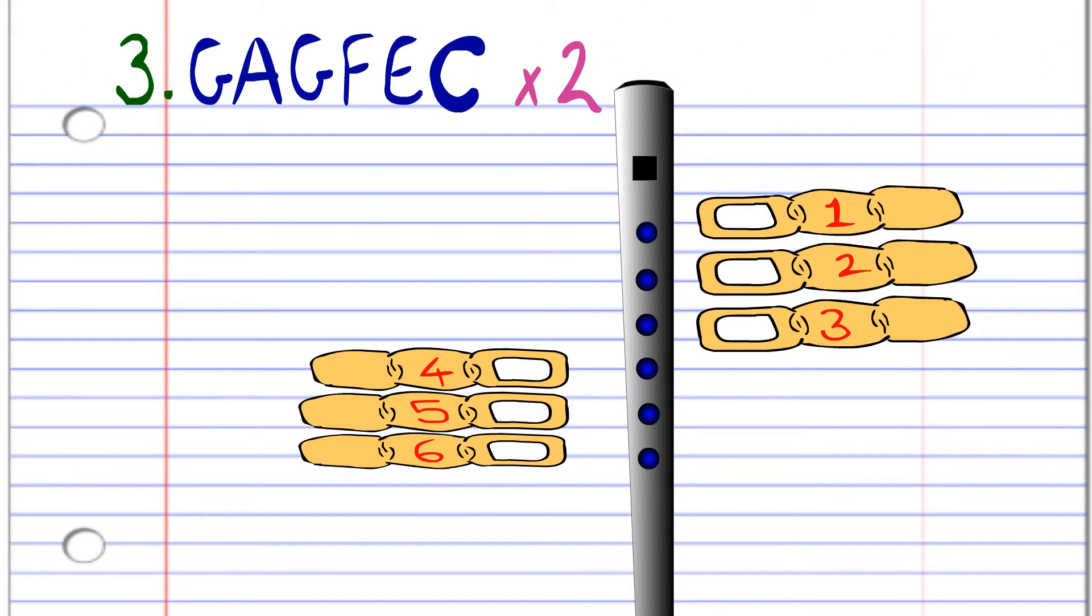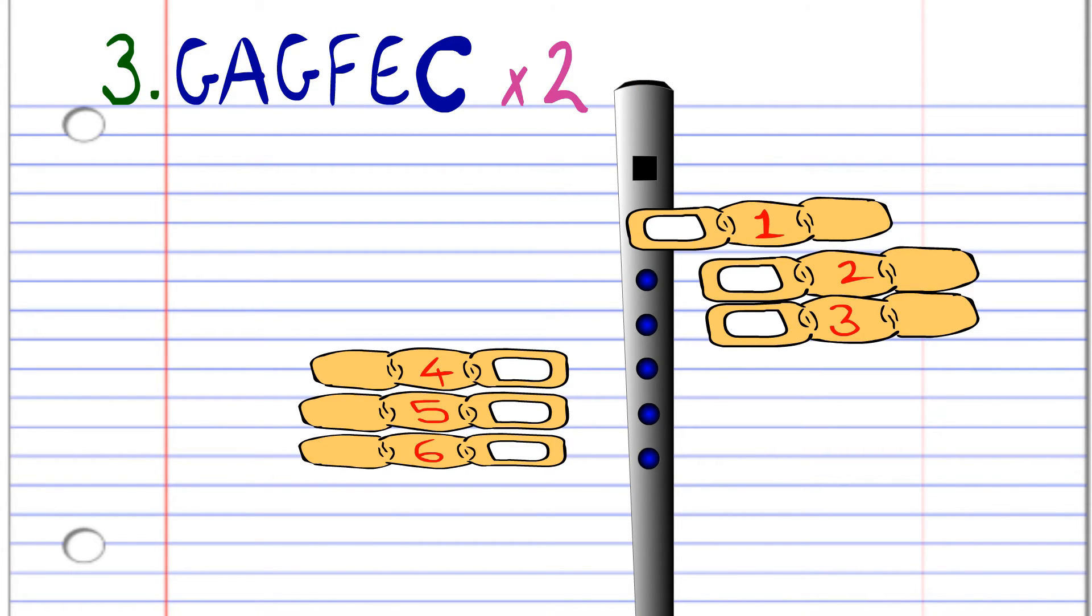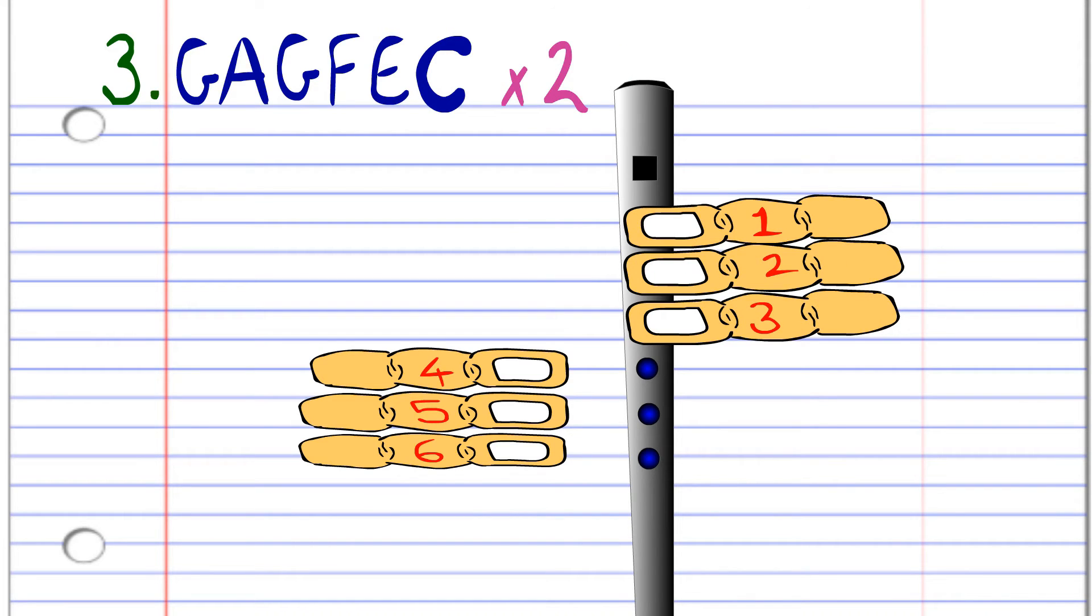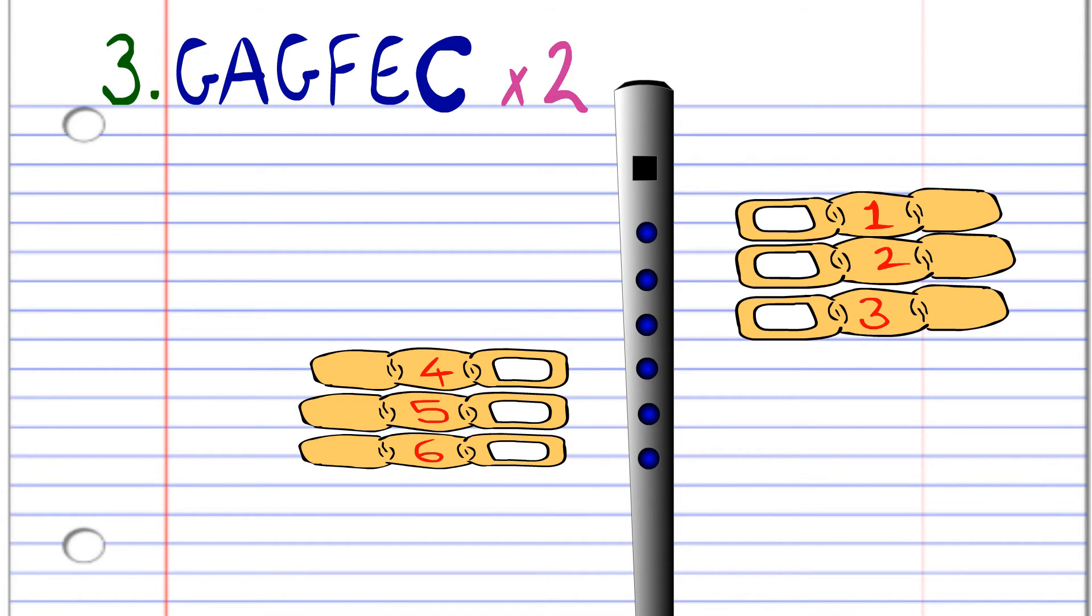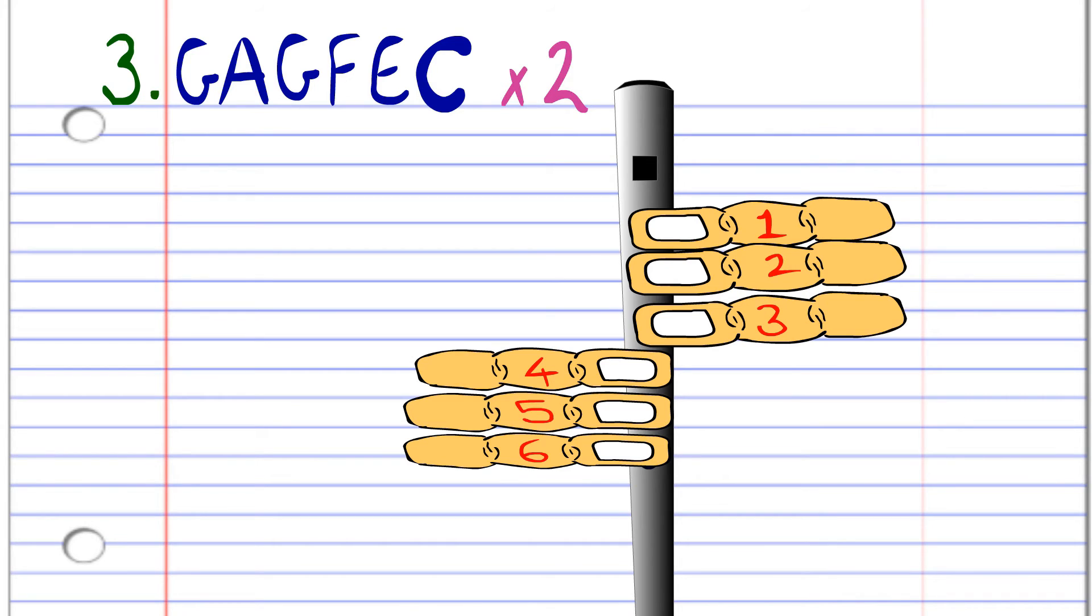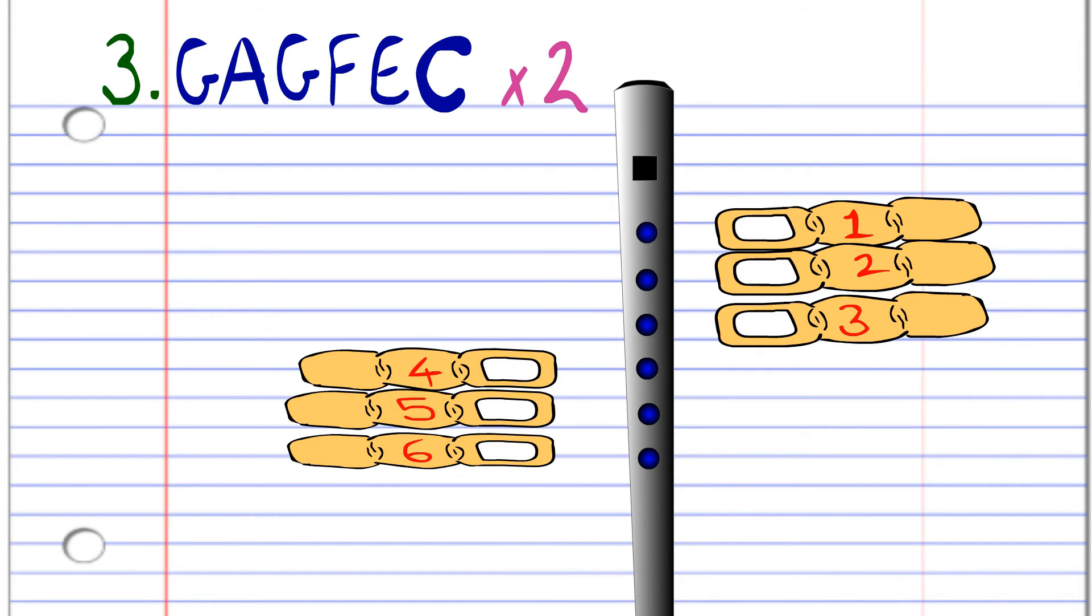For the third phrase, cover holes one to two with fingers one and two and blow once. Then cover hole one with finger one and blow once. Cover holes one to two with fingers one and two and blow once. Cover holes one to three with fingers one to three and blow once. Cover holes one to four with fingers one to four and blow once. Cover holes one to six with fingers one to six and blow once. And then repeat this phrase once. After some practice you should be able to play it like this.